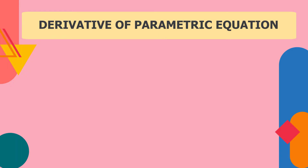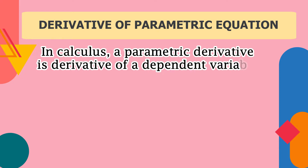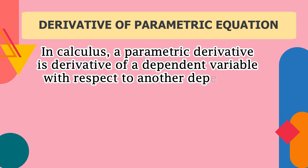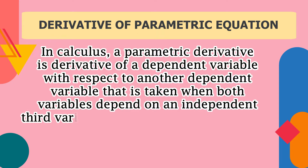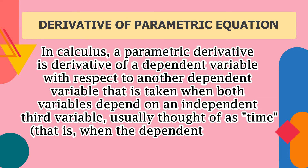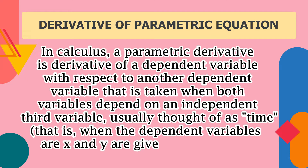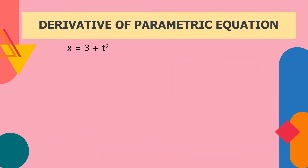Let's have some examples on how to solve the derivative of a parametric equation. In calculus, a parametric derivative is a derivative of a dependent variable with respect to another dependent variable, taken when both variables depend on an independent third variable — usually thought of as time. That is when the dependent variables x and y are given by parametric equations in t. For example, x = 3 + t² and y = 2t² − 4t⁴.